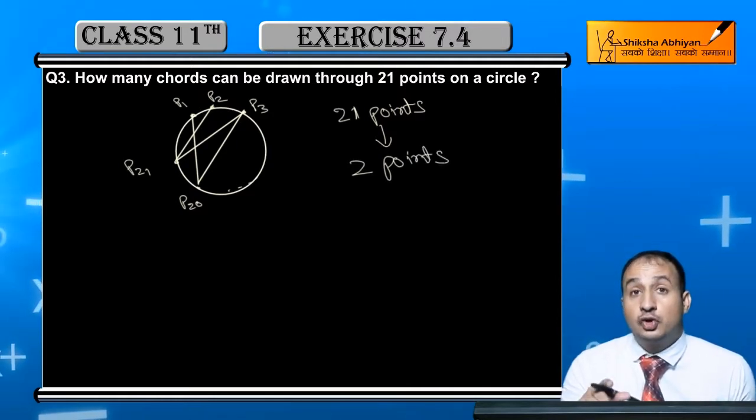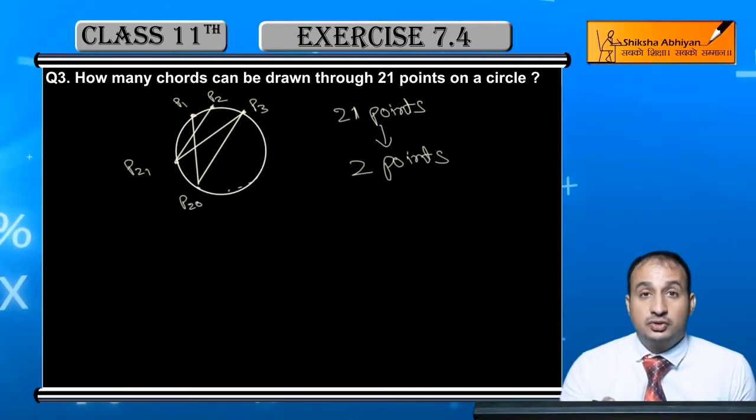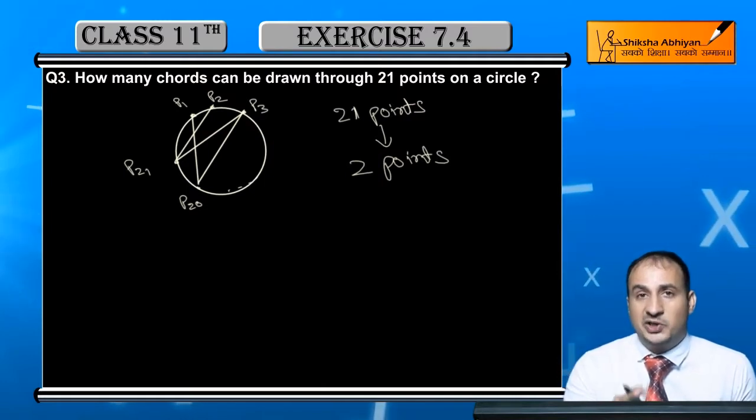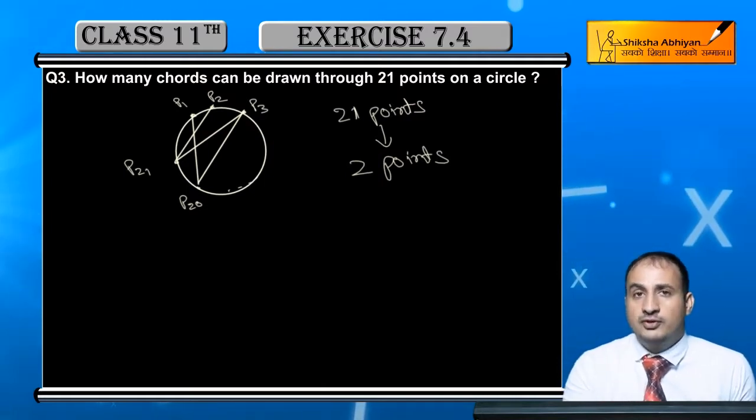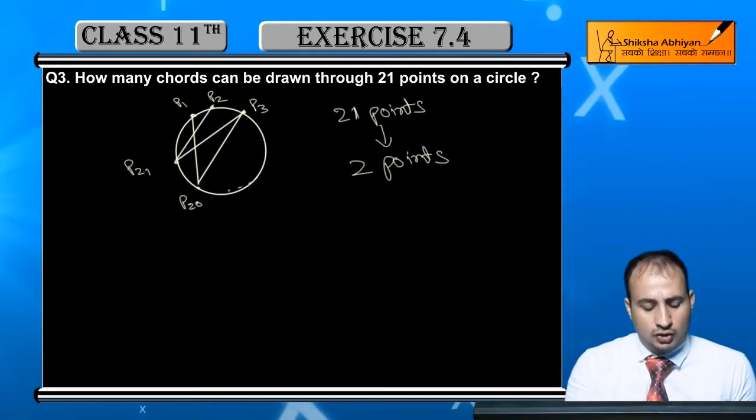Out of 21 points, select any two points. Any two points that form the chord - so all possible selections out of 21 points, all those selections of two points will form chords because you selected two points from 21 points and then drew a chord from them. This will be your answer.